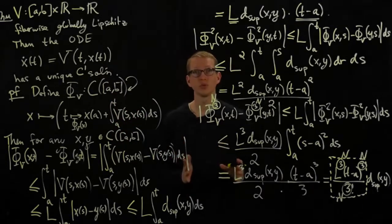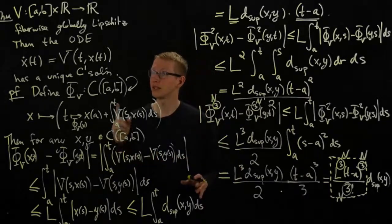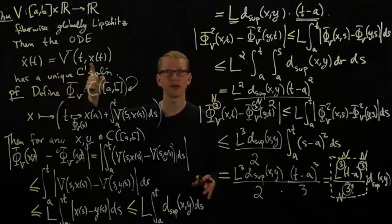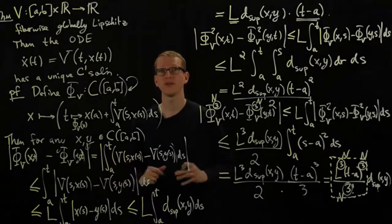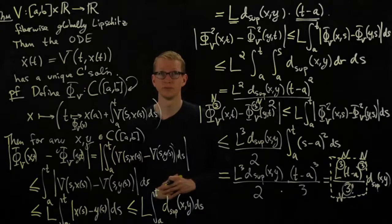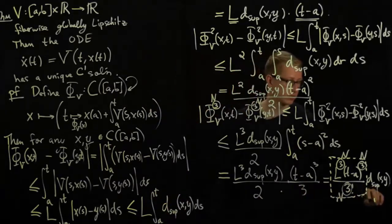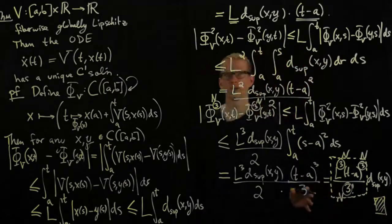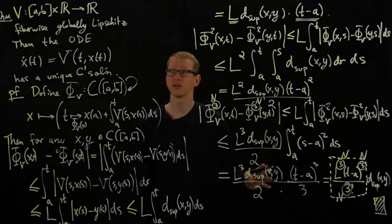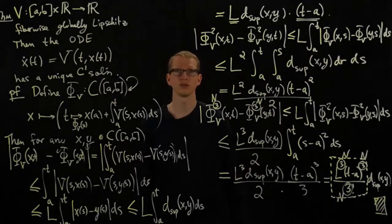This proves that there does exist a continuous function on AB that satisfies this differential equation. What it doesn't prove is that that function is also differentiable. And I'll leave that part to you as an exercise and this concludes the proof of the existence and uniqueness for solutions to ordinary differential equations.